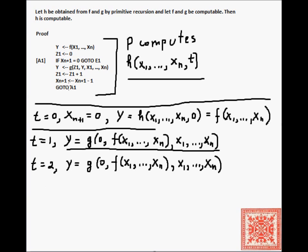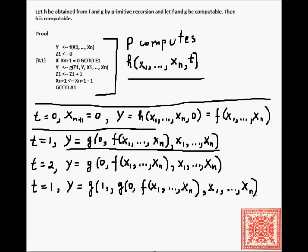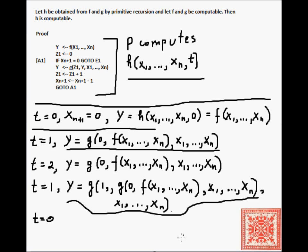If t equals two: y is first equal to f of x1 through xn. On the first iteration of the A1 loop, y equals g of zero and then f of x1 through xn and x1 through xn. On the next iteration, t is decremented — xn+1 becomes one — and y becomes g of one applied to g of zero of f of x1 through xn and x1 through xn, with access to x1 through xn as well. Then we exit the loop because t becomes zero.